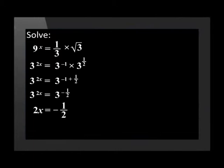The bases are the same on both sides of the equation. This means that the exponents 2x and negative one half have the same value. To solve for x, we divide negative one half by 2 to get x equal to negative one quarter.